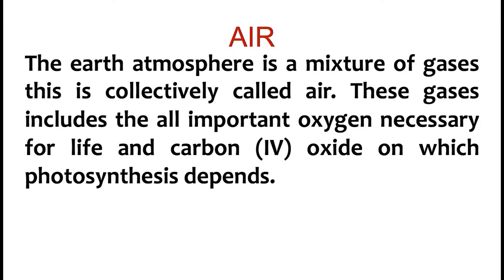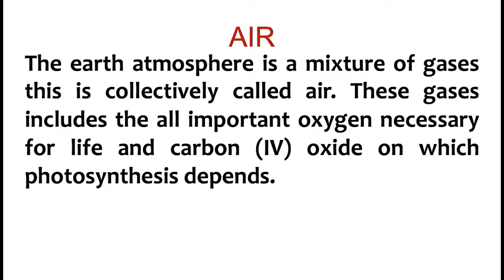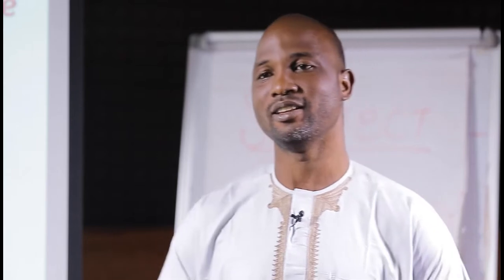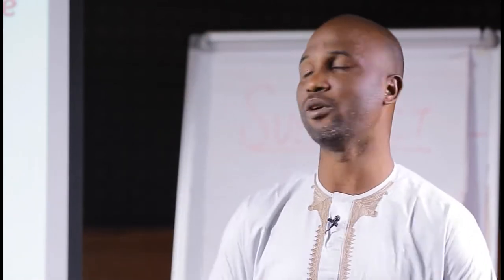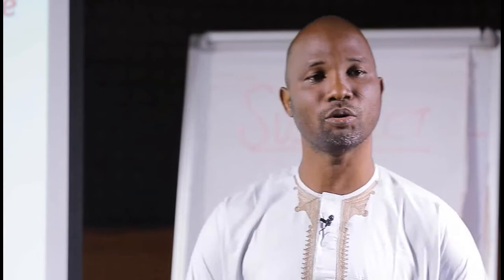The earth's atmosphere is a mixture of gases, collectively called air. Air is a mixture of gases. These gases include all-important oxygen, necessary for life, and carbon dioxide, which photosynthesis depends on. Oxygen is very important to man since we breathe in oxygen and we breathe out carbon dioxide. Plants also use carbon dioxide for photosynthesis, which is a process where they produce their own food in the presence of sunlight and chlorophyll.